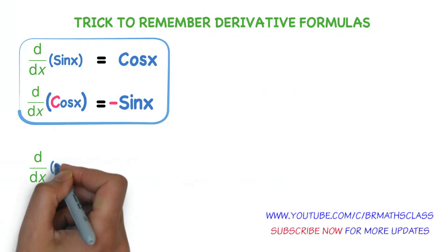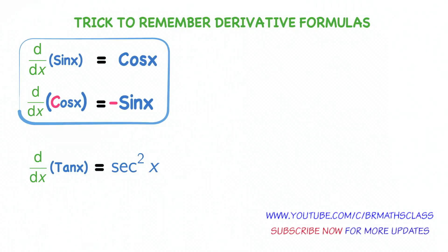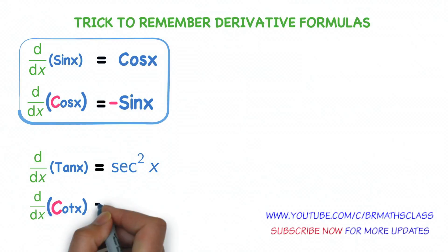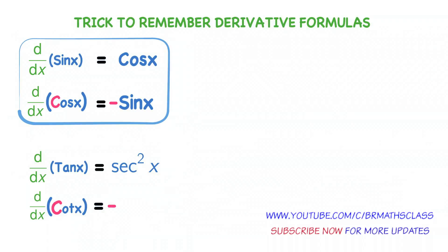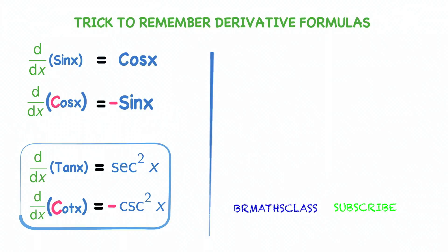Derivative of tan x equal to secant square x. In these derivatives of trigonometric functions, only two functions have squares in their answers. Derivative of tan x is secant square x. Derivative of cot x is minus cosecant square x. Remember that: derivative of tan x is secant square x, and derivative of cot x is minus cosecant square x.